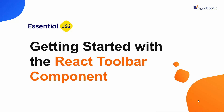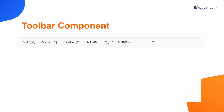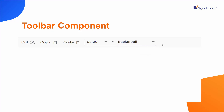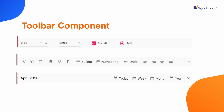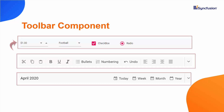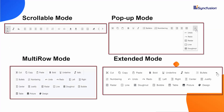Hi everyone, welcome to this video on how to get started with the React Toolbar component from Syncfusion. In general, a toolbar displays a collection of clickable icons, buttons, or other elements that perform specific functions when you click on them. In this video, I am going to show you how to add a React Toolbar component to a React app, and then explain how to set prefix icons and separators, add input-based components to the toolbar, and change the toolbar display mode.